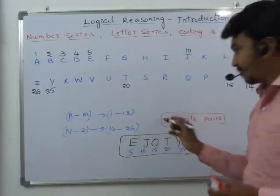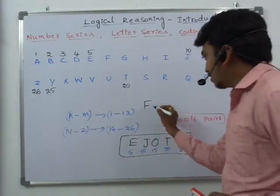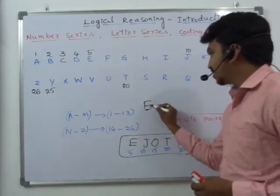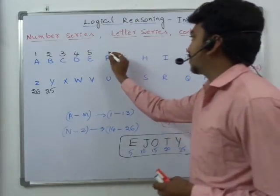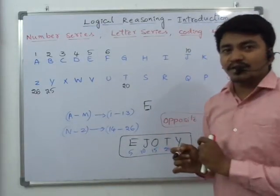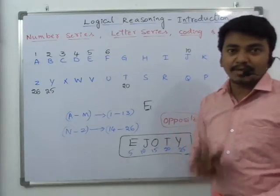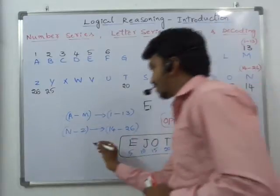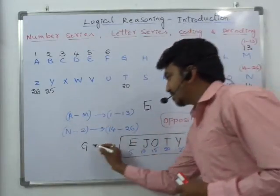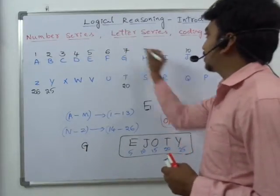Now how to remember the position of F? If you see F and join the two lines, it forms the digit 6. So the position of F is 6. From now onwards, carefully observe some letters — they actually resemble their positions. If you see the letter G, it resembles 7, so the position of G is 7.